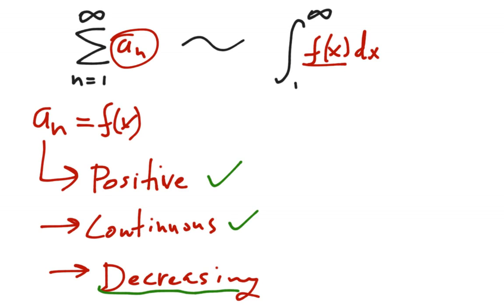In terms of checking to see whether or not the function is decreasing, one way you can do that is to do the nth term test. Because if the terms actually go down to zero, it means that they're probably decreasing down to zero, and that means that we're decreasing. So if the nth term test gives you zero, then the integral test is a good place to start after that.